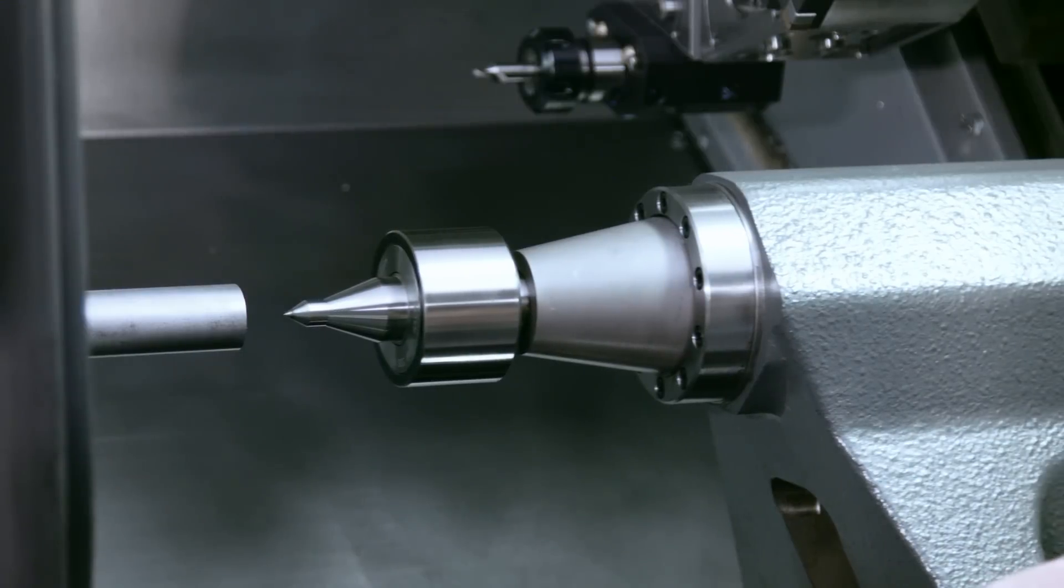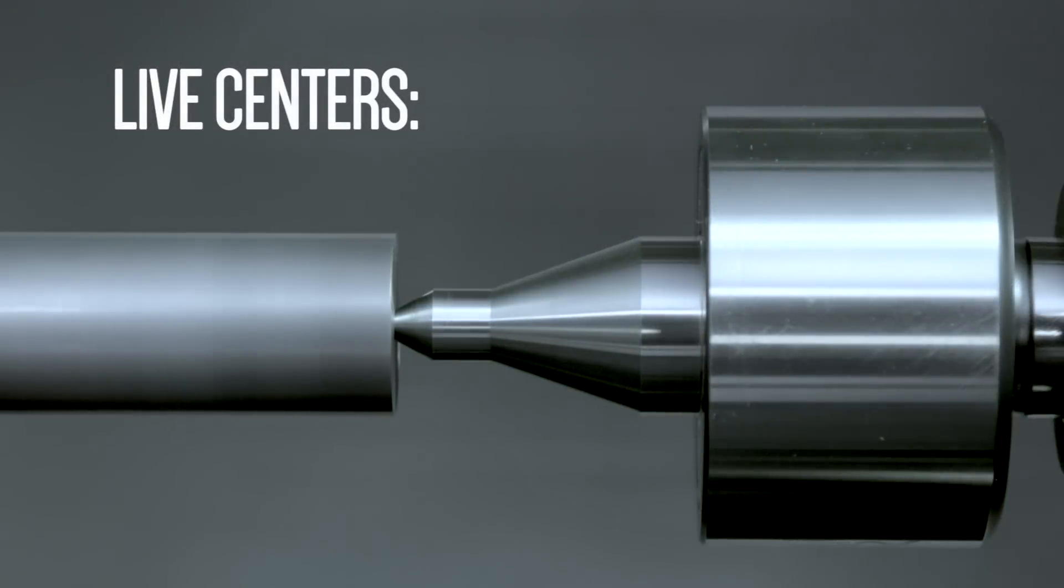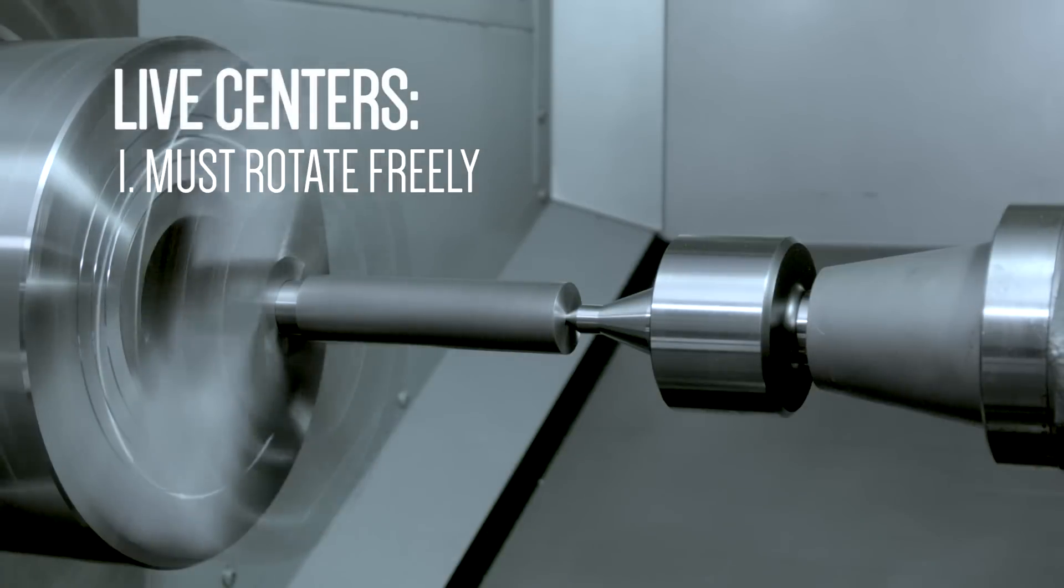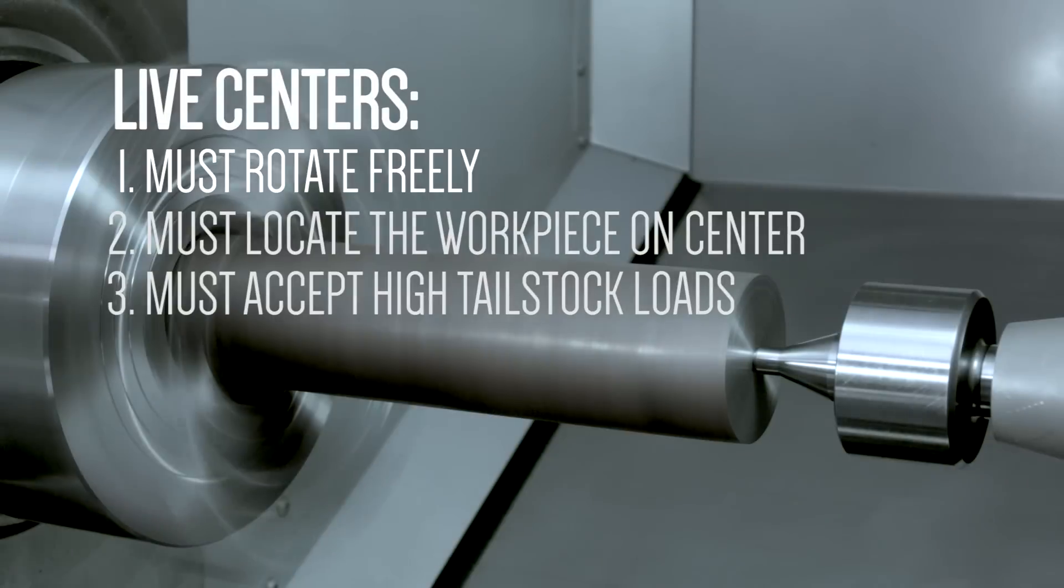Okay, so can we run our part already? Yes, but before we do, there's one more thing to consider. The live center. This connects the part to the tailstock. It must rotate freely. It must locate the workpiece precisely and rigidly on center. And it must accept the speeds and loads your machine will exert.